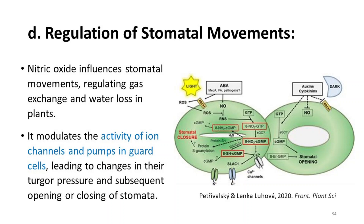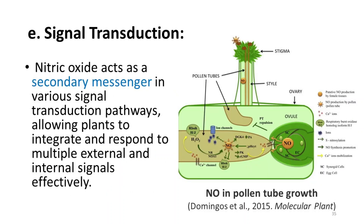Nitric oxide participates in the regulation of stomatal movements. It influences stomatal movements, regulating gas exchange and water loss in plants. It modulates the activity of ion channels and pumps in guard cells, leading to changes in their turgor pressure and subsequent opening or closing of stomata. Nitric oxide is also involved in signal transduction, acting as a secondary messenger in various signal transduction pathways, allowing plants to integrate and respond to multiple external and internal signals effectively.